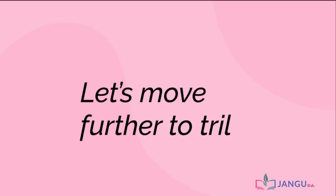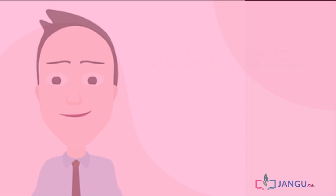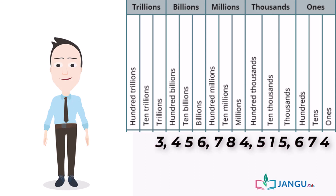Now let's move further to trillions. Can you write this number in words? First, we need to draw a place value chart and place each digit in the chart from left to right. Let's read it together. So we have three trillion, four hundred billion, fifty billion, six billion, seven hundred million, eighty million, four million, five hundred thousand, ten thousand, five thousand, six hundred seventy tens, and four units.